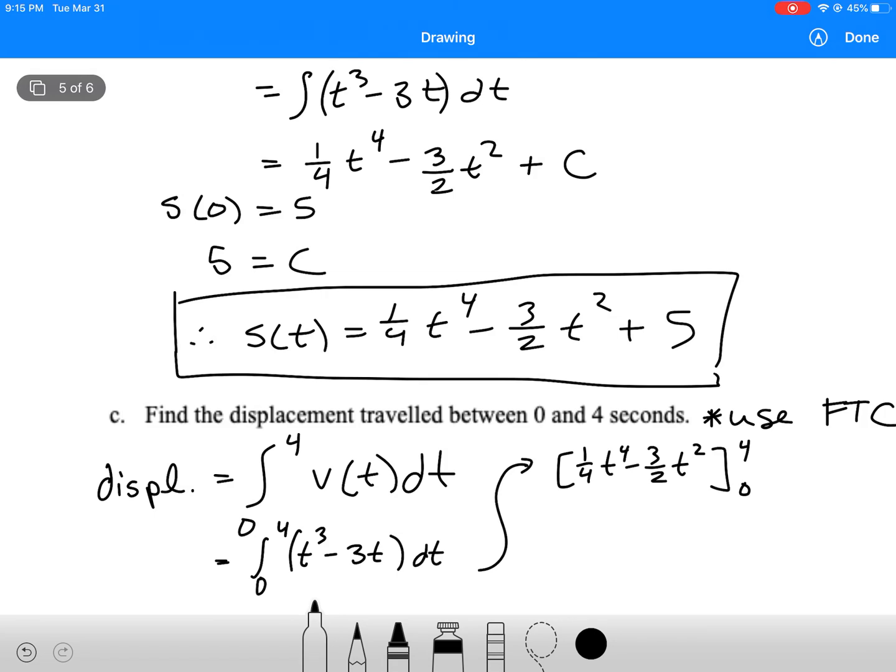Note that there's no c here because I'm doing a definite integral instead of an indefinite one. So then if I subtract that, I would get 1 quarter times 4 to the 4. My other part is going to be 0, so I'm okay to go ahead here.